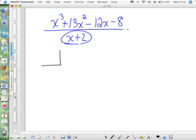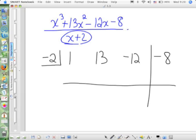So we start off by taking the constant in our divisor, but the opposite sign. So what's going to go here? Negative 2. And then I list out all of my coefficients from the top. What's the coefficient of x cubed? 1. What's the next one? 13, negative 12, negative 8. Indicate to yourself, if there is a remainder, where it will be. And how do we start? Just bring down the 1.